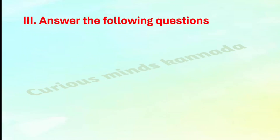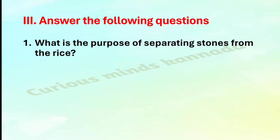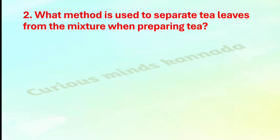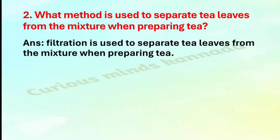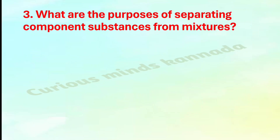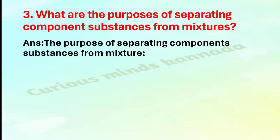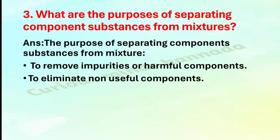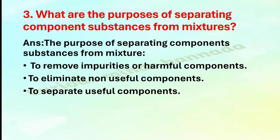Answer the following questions. First: What is the purpose of separating stones from rice? Answer: To remove the unwanted stones from the usable rice. Second: What method is used to separate tea leaves from the mixture when preparing tea? Answer: Filtration is used to separate tea leaves from the mixture when preparing tea. Third: What are the purposes of separating component substances from mixtures? Answer: To remove impurities or harmful components, to eliminate non-useful components, and to separate useful components.